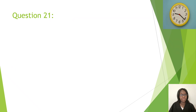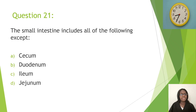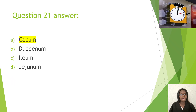Question twenty-one: The small intestine includes all of the following except — A, cecum; B, duodenum; C, ileum; D, jejunum. The correct answer is A, cecum. The cecum is actually part of the large intestine.